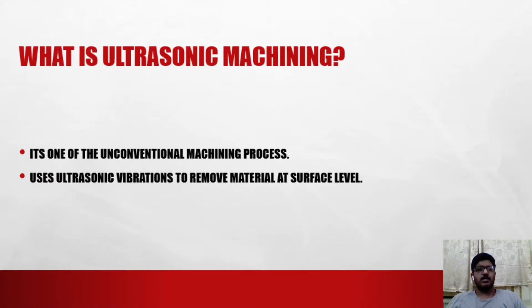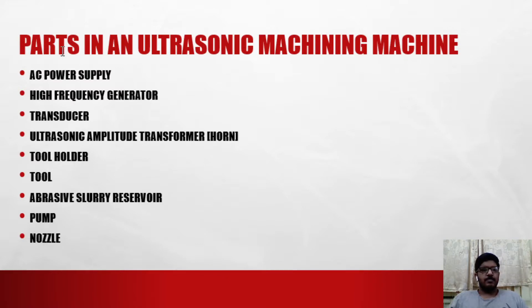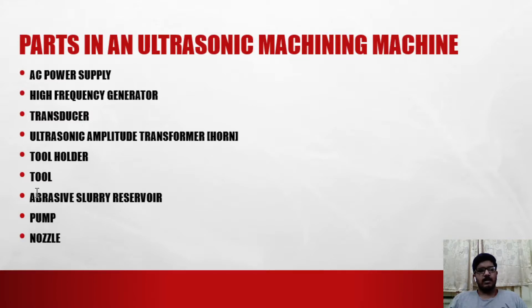We'll see what parts are required for ultrasonic machining. These are: an AC power supply, a high frequency generator, a transducer, an ultrasonic amplitude transformer (also simply known as a horn), a tool holder, a tool, abrasive slurry, a pump, and a nozzle.